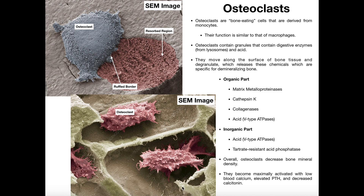In another image, osteoclasts — colored distinctly — have degraded deeper into the bone tissue. This appears to be related to the formation of spongy bone; you can actually see the beginnings of trabeculae forming, and the regions hollowed out by osteoclast activity are clearly visible.